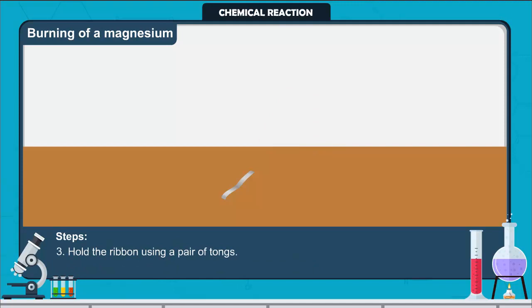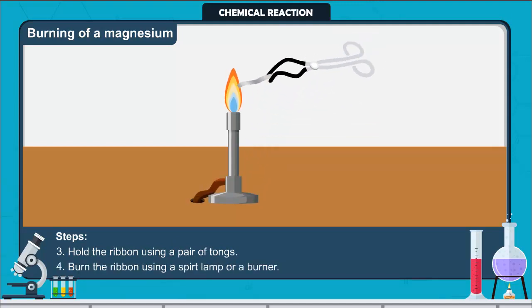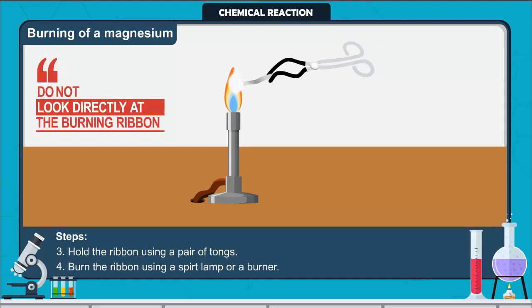Hold the ribbon using a pair of tongs. Burn the ribbon using a spirit lamp or a burner. The burning ribbon should be held at arm's length. Do not look directly at the burning ribbon.